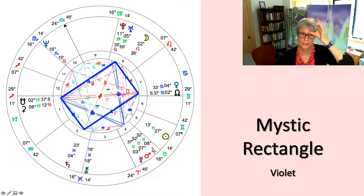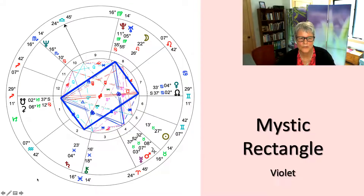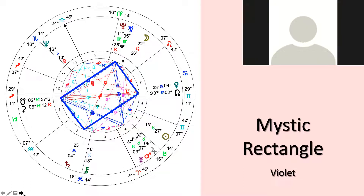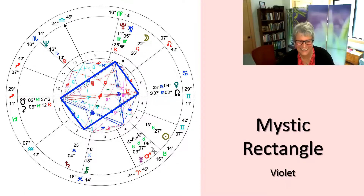Christina wraps up with Violet: 'Feel free to email me any questions later. It would be interesting to see whether other people with Mystic Rectangles are also attuned to patterns in their lives like you are — not the same numbers, but finding patterns popping up over and over again. I'll look at that with the others.' Violet: 'It's like life continuously saying, I'm here, I'm supporting you — let go even deeper.' Christina: 'That's excellent. Moving on.'